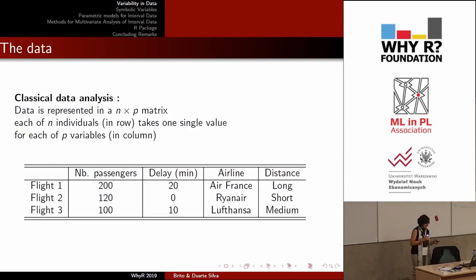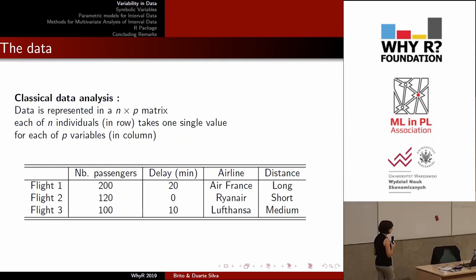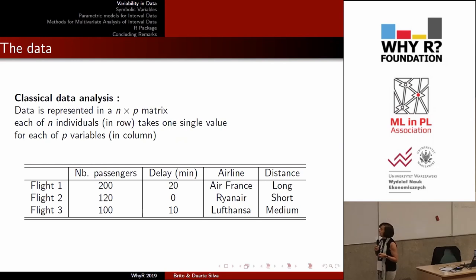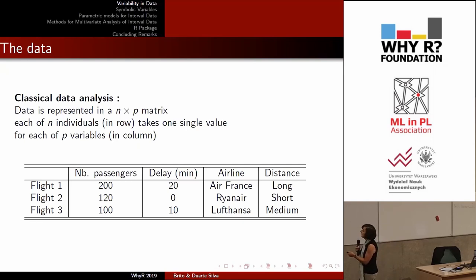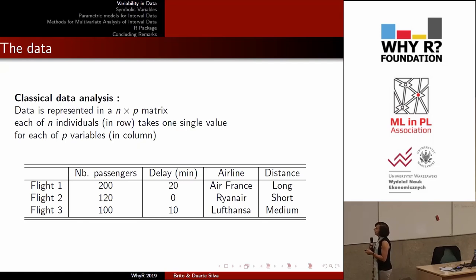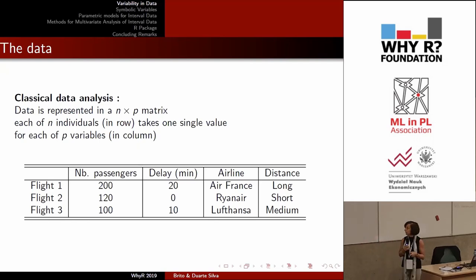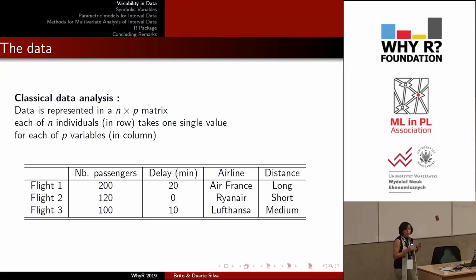In what we now call classical or standard data analysis, multivariate data is usually represented in a data array of n rows by p columns, where each of n individuals or units is associated with one single value for each of the p variables. These variables may be numerical — discrete or continuous — or categorical with or without an order, like in this example describing flights arriving at a given airport. Of course, values may be missing, but still one value should be there.